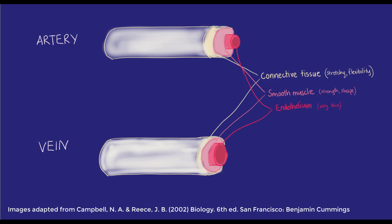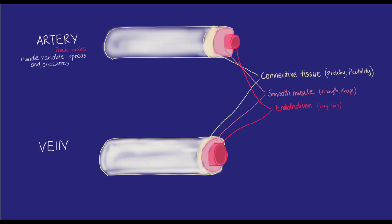While their tissue types are the same, the tissues of arteries are thicker to cope with the uneven speed and pressure of the blood rushing within them. Veins, on the other hand, are thinner and also have one-way valves that stop blood flowing back towards capillaries.